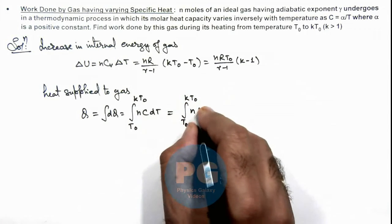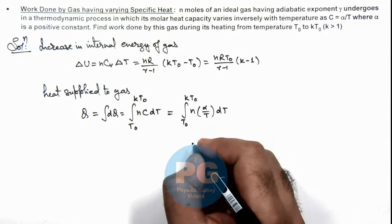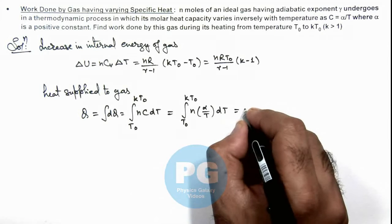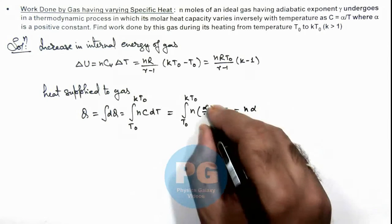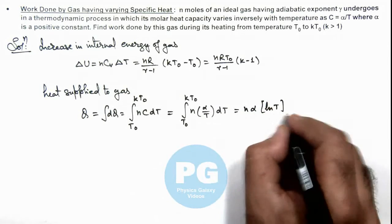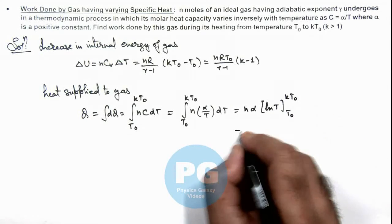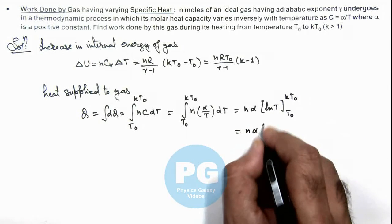This on integrating gives n alpha as a constant, and 1/T will be ln of T. We put limits from T₀ to kT₀, which finally gives us n alpha ln of k.